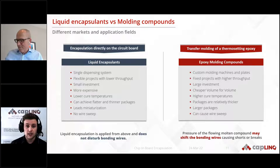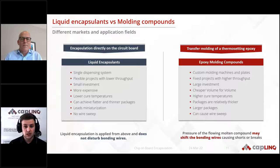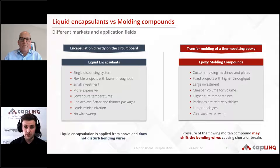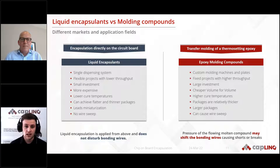Liquid encapsulants, on the other hand, require only a single dispensing system, so the initial investment cost is lower. However, products are generally more expensive per volume and throughput is also lower. You can achieve thinner and flatter packages with liquid encapsulation, and you have no wire sweepage because you dispense from the top down with no huge pressures. Neither liquid encapsulants nor transfer molding is universally better — both have their benefits and drawbacks depending on the application.